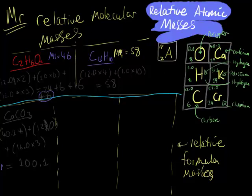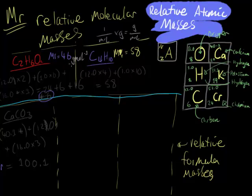For all of these, the units are grams per mole. When I get to my video about moles, I'll explain the whole concept of moles, molar masses, and things like that. The units are grams per mole — g mol⁻¹ — which means that for every mole of this particular molecule, we will get 46 grams of that substance.